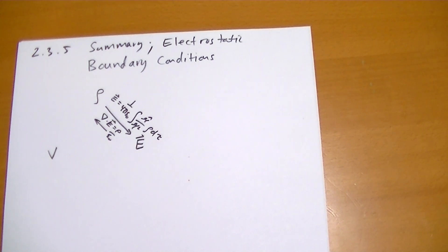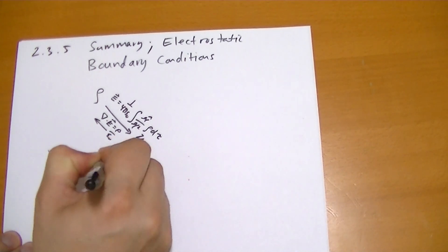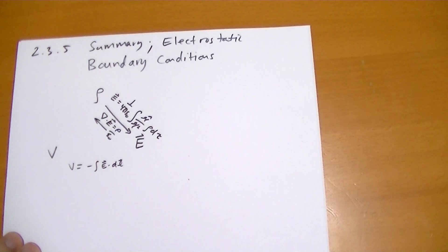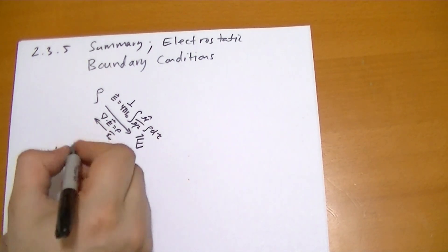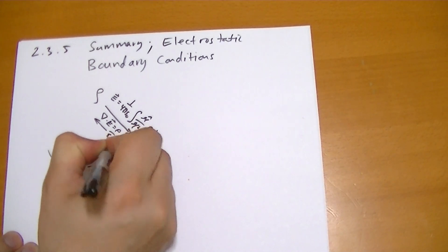And if you want to find V given the E, then you use the formula V is equal to minus the integral of E dot DL. And if you know the potential and want to find E, then E is simply equal to minus the grad of V.